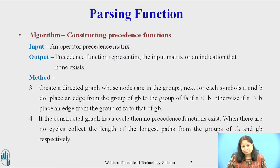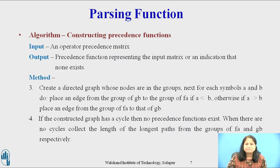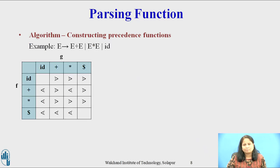Step 4: if the constructed graph has a cycle, then no precedence function exists. When there are no cycles, collect the length of the longest path from the group of f(a) and g(b) respectively.